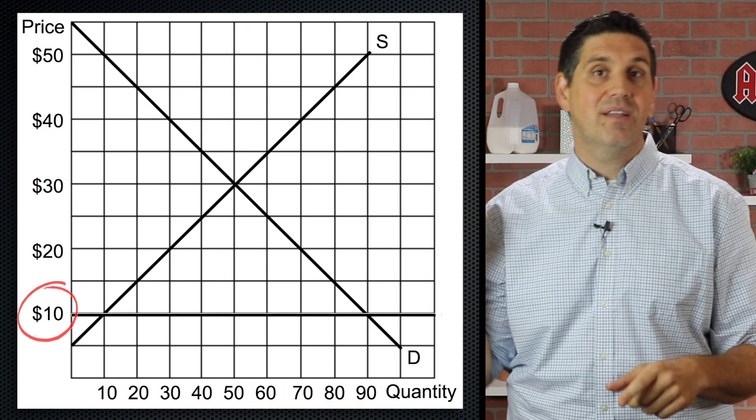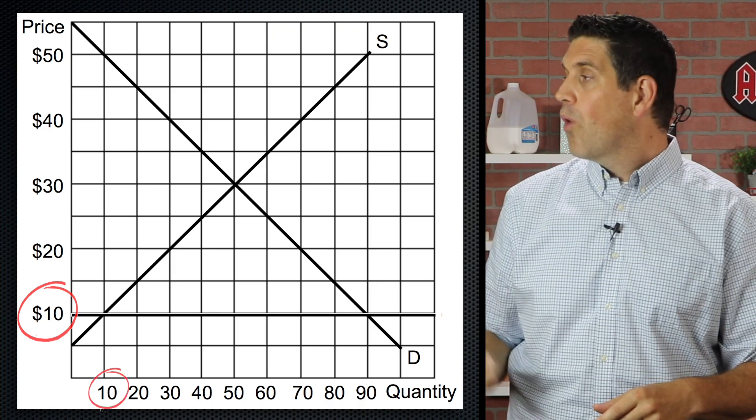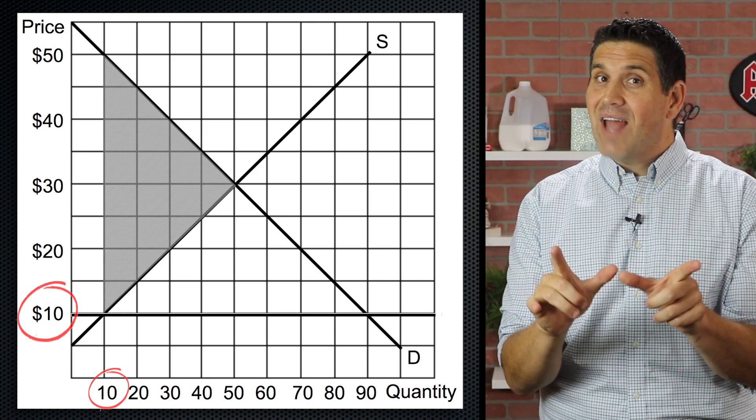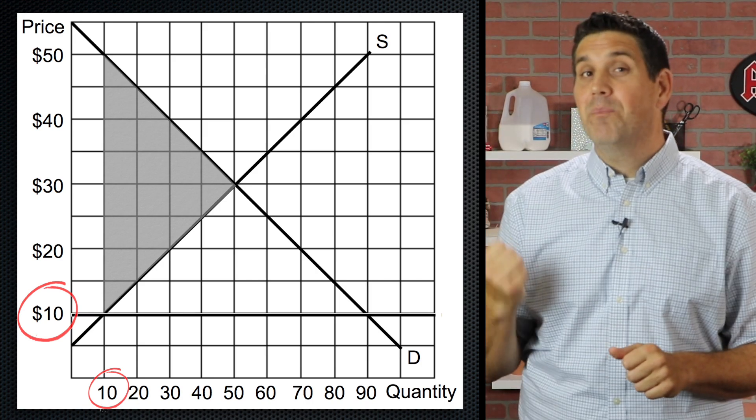A lot of students see the price here at $10. They go, well, there must be a shortage. We're only going to produce 10 units. So we're going to have some deadweight loss, but there's not going to be a shortage and there's not going to be deadweight loss.